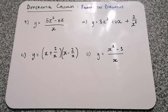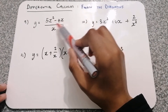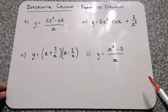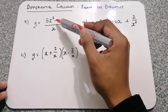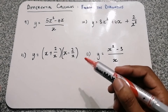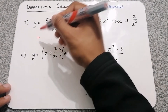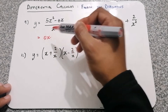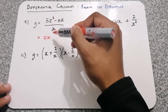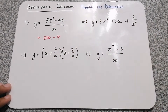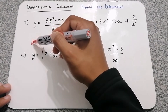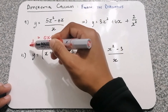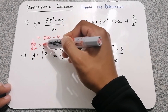Question 9: y equals 5x squared minus 4x over x. The questions are getting slightly harder. First we divide both terms by x, then differentiate. 5x squared divided by x is just 5x, and 4x divided by x is just 4. The derivative of 5x minus 4 is 5. So your answer is 5.